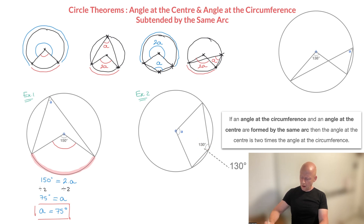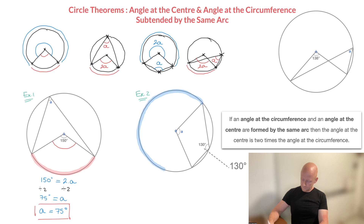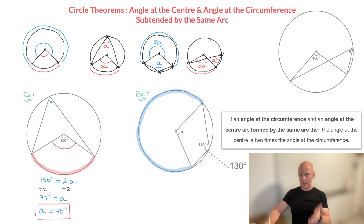Looking at this angle, we quickly realize that the arc subtending it is the long arc I'm hovering over right now — I'll highlight that long arc in blue. Now that we know which arc is subtending the angle at the circumference, we need to choose the angle at the center which is being subtended by that same arc. The angle at the center being formed by this blue arc is this angle right here, which I'll call angle B.